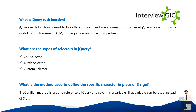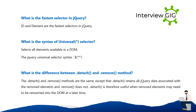What is the method used to define a specific character in place of the dollar sign? The noConflict() method is used to reference jQuery and save it in a variable. That variable can be used instead of the $ sign. What is the fastest selector in jQuery? ID and element selectors are the fastest selectors in jQuery.